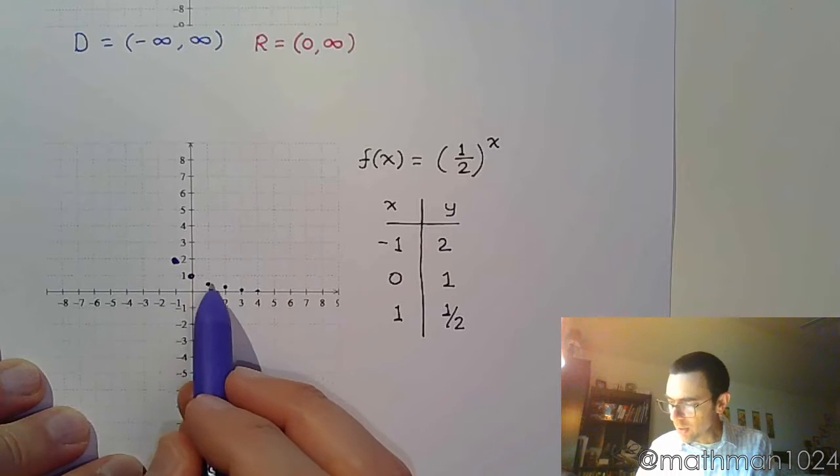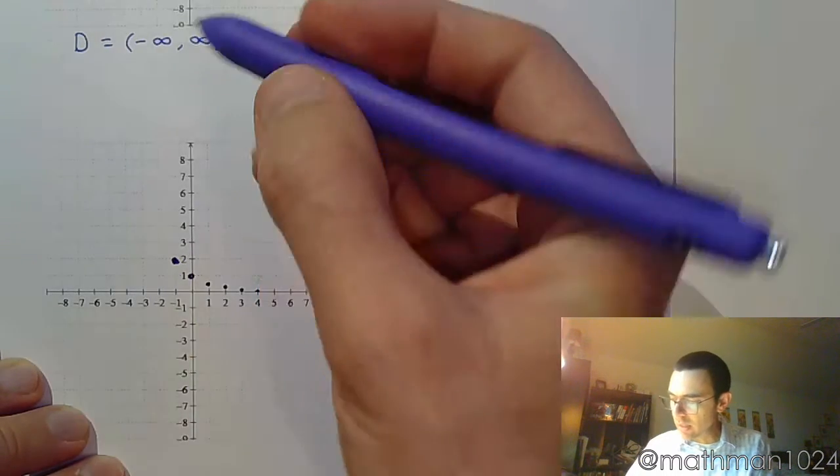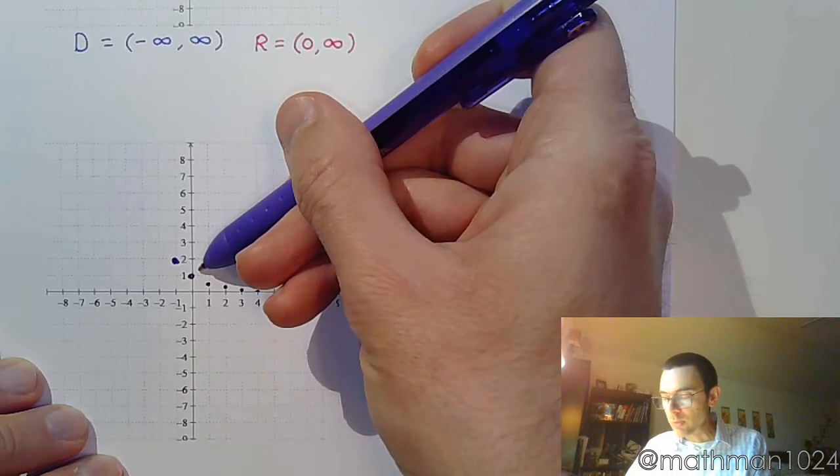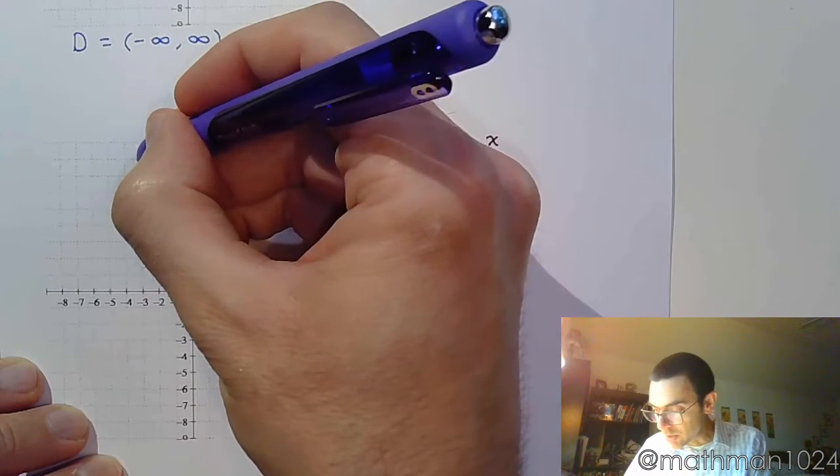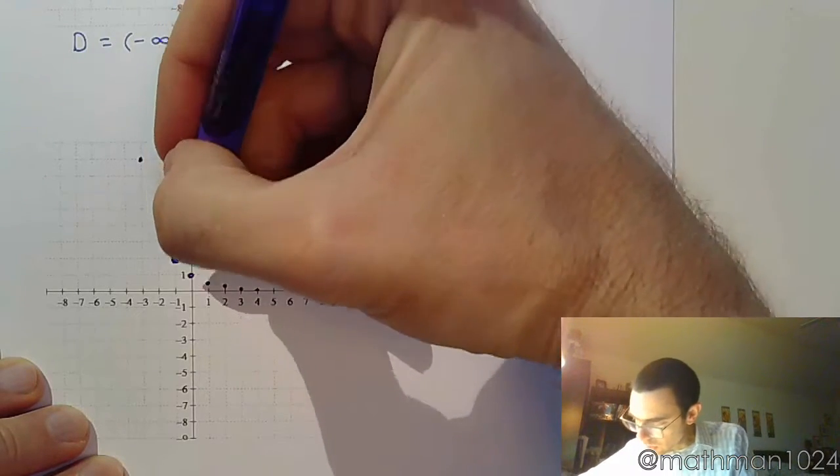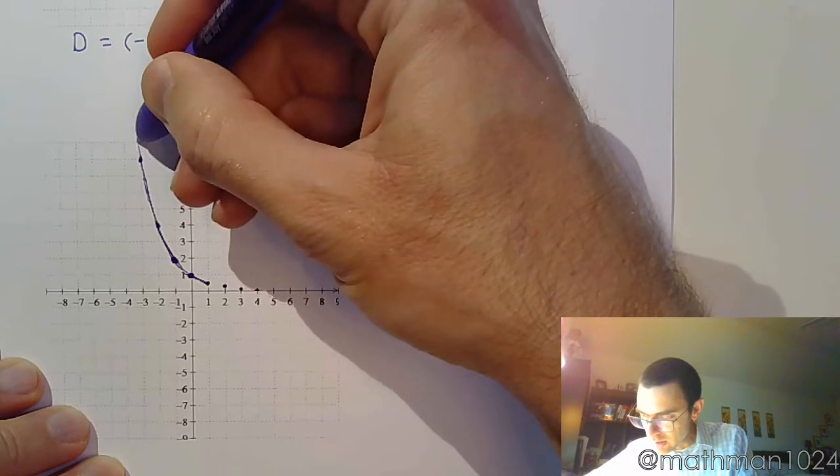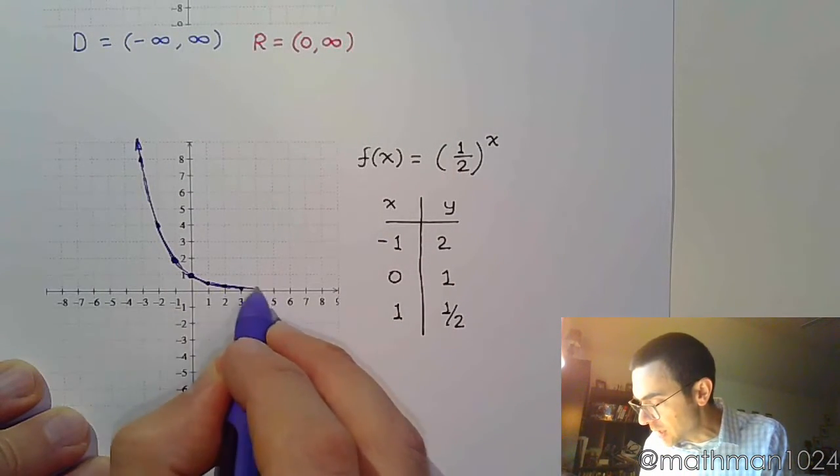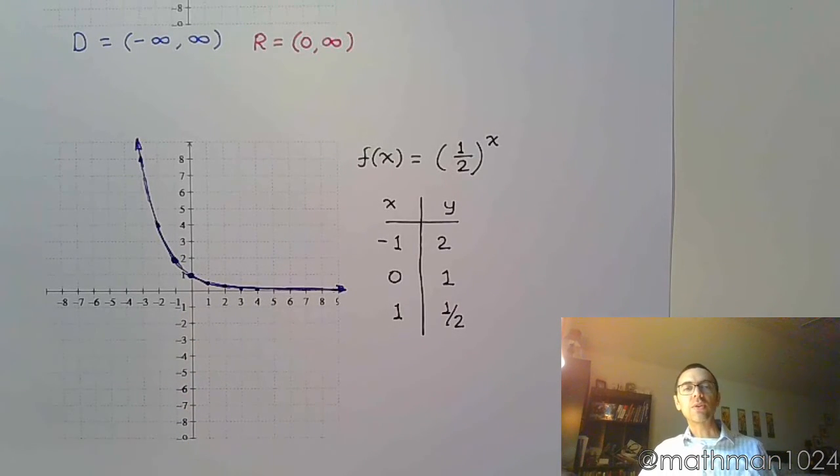So I'm dividing by 2 as I go to the right, which means I'm going to multiply times 2 as I go to the left. So 2 times 1/2 is 1, 2 times 1 is 2, 2 times 2 is 4, times 2 is 8. And so you'll see this shape is pretty much the same as 2^x, except instead of increasing, this guy is decreasing everywhere.